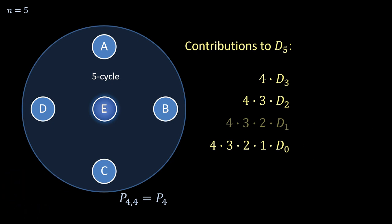Now the previously computed values can be plugged in to obtain D_5, which turns out to be 44.